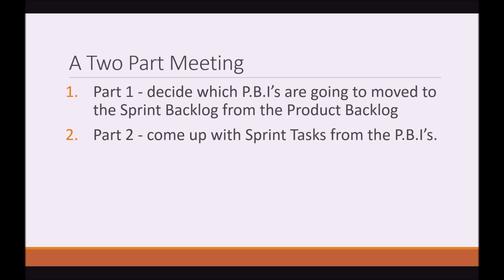The Sprint Planning Meeting is known as a 2-part meeting. In Part 1, we decide which PBIs — Product Backlog Items — are going to be moved to the Sprint Backlog from the Product Backlog. In Part 2, we are going to come up with Sprint Tasks from the PBIs that we have moved into the Sprint Backlog.